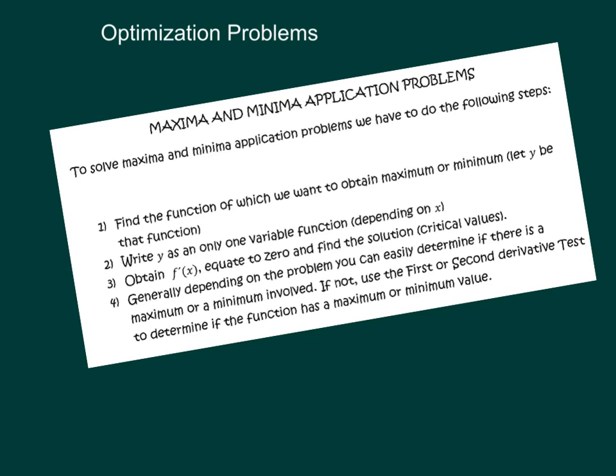And then we will have to follow the four following steps. First, you have to find the function. Then you have to write the function in only one variable. Then you have to obtain the derivative of the function, equate the derivative to zero, and find out the critical values. Once you have the critical values, generally you already have the answer. But then, depending on the problem, you can have a maximum value or a minimum value. If you have more than one value, then you have to do the first or the second derivative test to determine if the function has a maximum or a minimum.